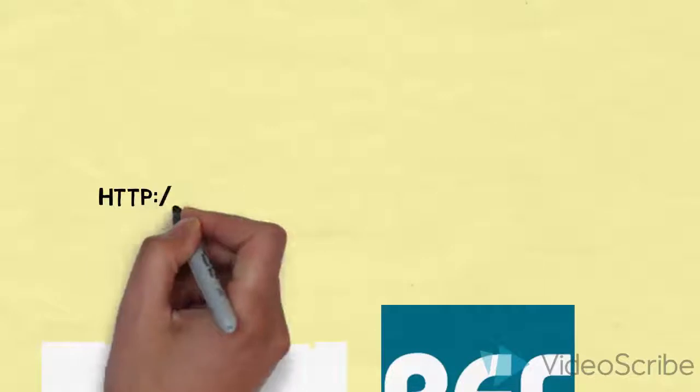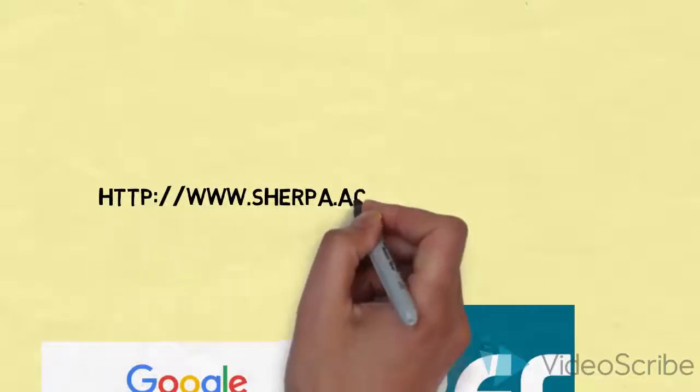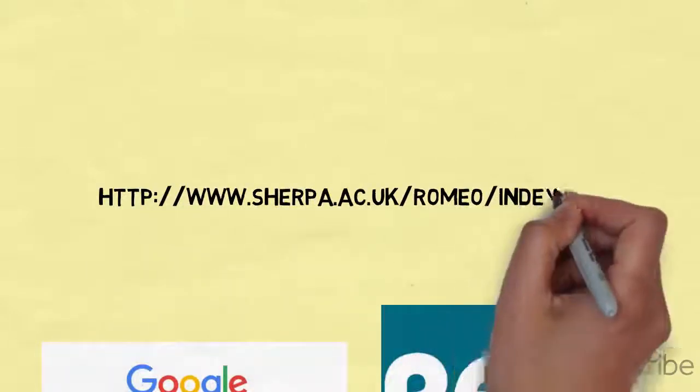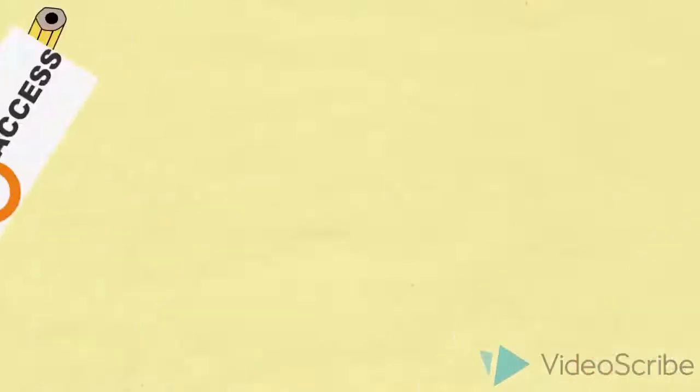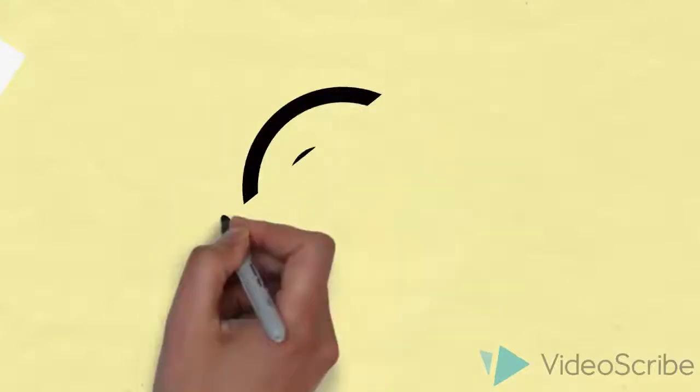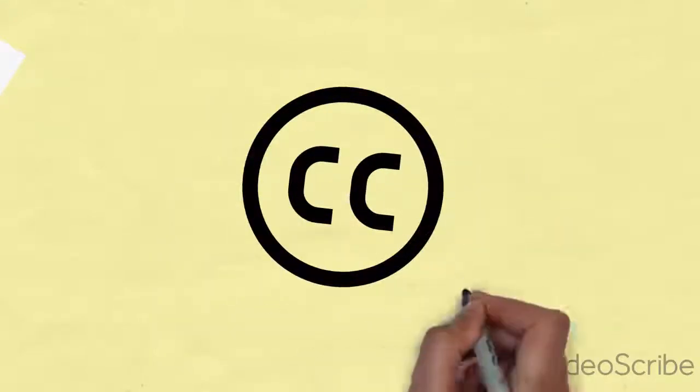You can check what rights you have as an author to share your work by going to the Sherpa Romeo website and checking what you are permitted to do with the research. Hopefully your research will have been licensed in a way that enables it to the widest audience possible.